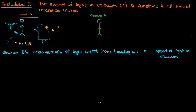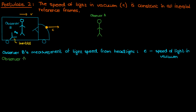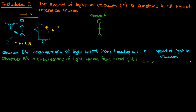Going back to our headlight scenario, according to Newtonian mechanics the measurement of the speed of light from the headlight by observer A would be C plus V — where C is the speed of light and V is the velocity of the car. However, this contradicts postulate 2. Observer A is stationary and therefore in an inertial reference frame, so postulate 2 tells us the speed of light observed by A is actually C, not C plus V. Newtonian mechanics is false in this regard.